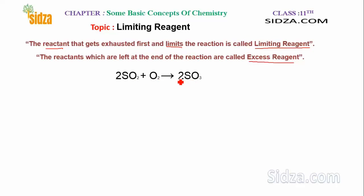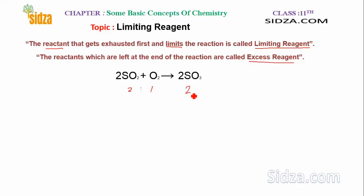Why do we balance it? From a balanced chemical equation we get the information about the ratio in which the reactants combine. From this equation, 2 moles of sulfur dioxide react with 1 mole of oxygen, so the molar ratio between SO2 and O2 is 2:1. When 2 moles of SO2 react with 1 mole of oxygen, we get 2 moles of sulfur trioxide.